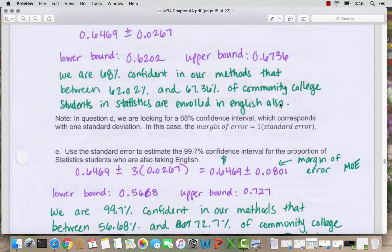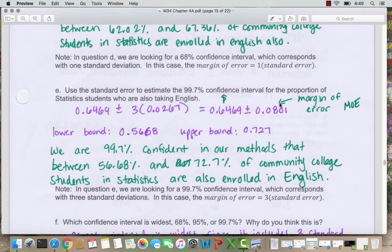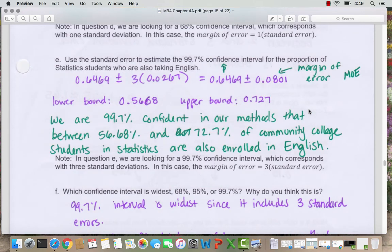So if we're more confident in our answer, then we need more room for error or a larger margin of error. So we can say as a statement that we are 99.7% confident in our methods that between 56.68% and 72.7% of community college students in statistics are also enrolled in English.